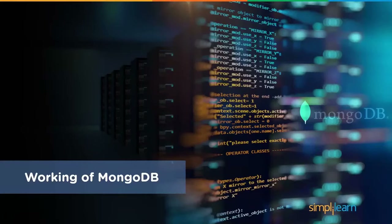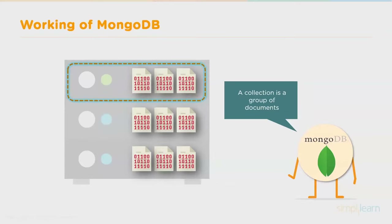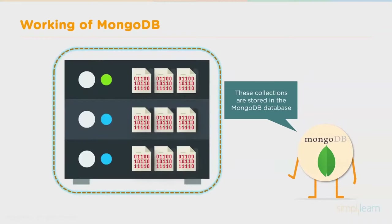Now let's look at how MongoDB works. Data is stored in documents using key-value pairs in the BSON format. At the backend, MongoDB converts JSON data into a binary format known as BSON. MongoDB also makes provision for nested data. All documents are stored in a collection — collections hold multiple documents, and since MongoDB is schema-less, documents in one collection need not be similar. These collections are stored in the MongoDB database. Nested data makes fetching extremely efficient compared to other databases.